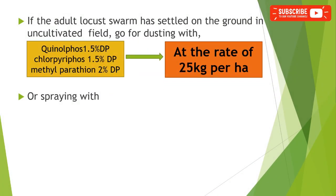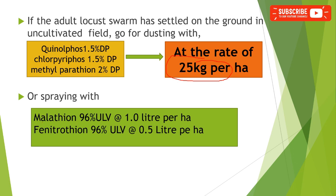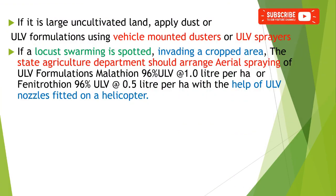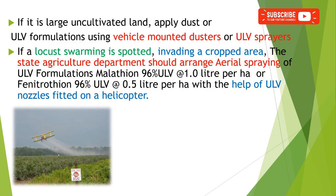If the adult locust swarm has settled on the ground in an uncultivated field, go for dusting with Phenthoate, Chlorpyrifos, or Methyl Parathion at the rate of 25 kg per hectare, or spraying with Malathion 96 percent or Fenitrothion 96 percent ultra low volume formulation using an ultra low volume sprayer at the rate of Malathion 1 liter per hectare and Fenitrothion 0.5 liter per hectare.